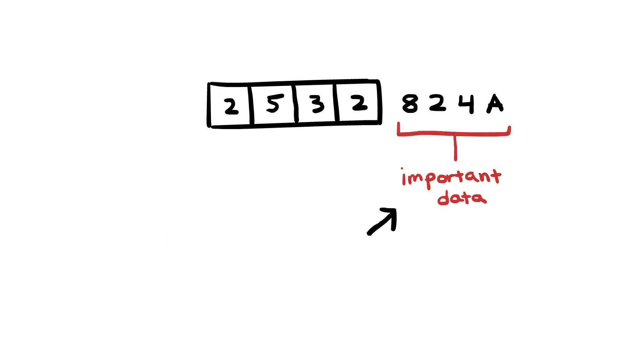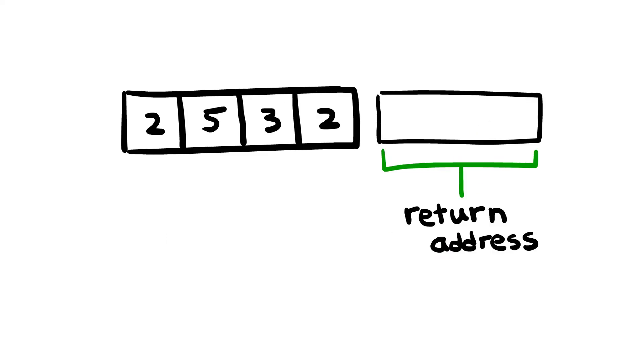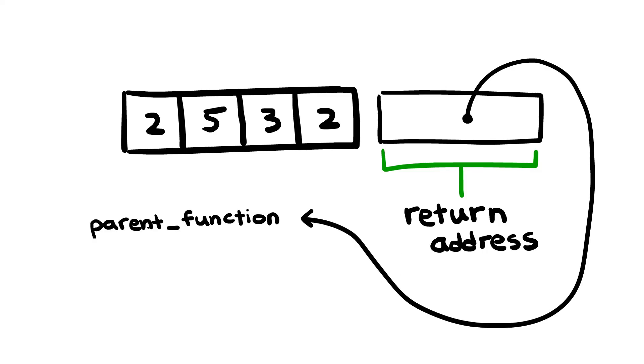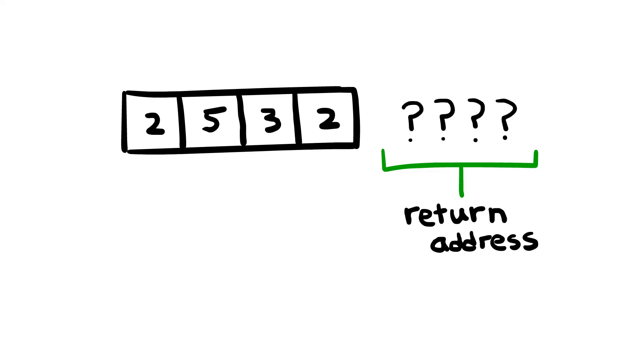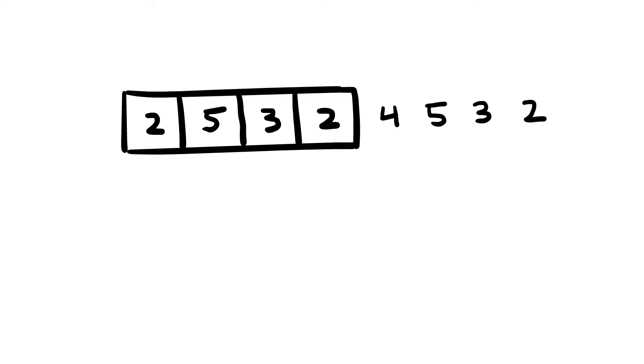Well, that information I was talking about is known as a return address. The return address represents the location in code that we're going to go back to after we're done with the current function. Typically, a user cannot interact with or even see the return address. However, with a buffer overflow, there's a chance that the return address will get overwritten.